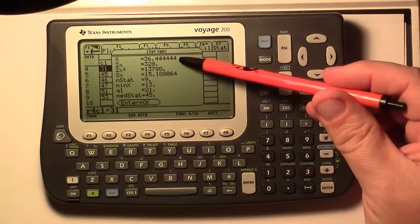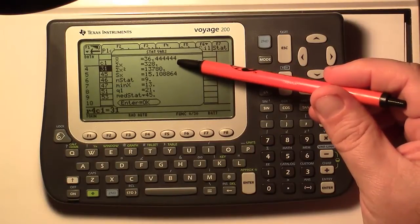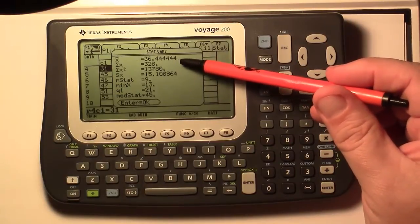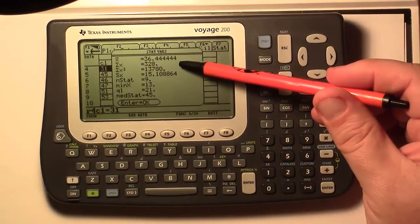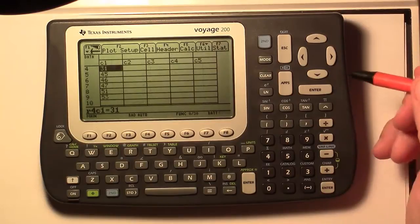And we see our X bar. Our first option here says 36.44 rounded to two decimal places. So that's our mean. That's not only your sample mean, but that's your population mean. And it tells us to do an enter for OK. So do an enter.